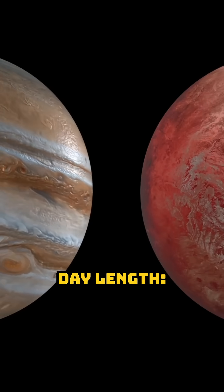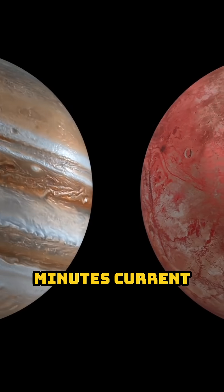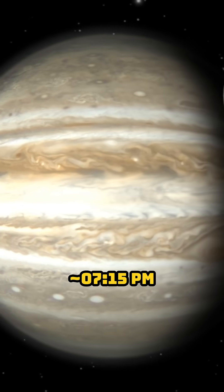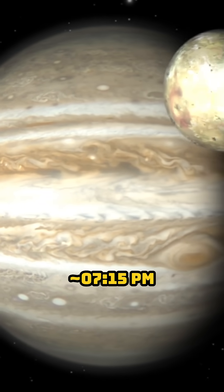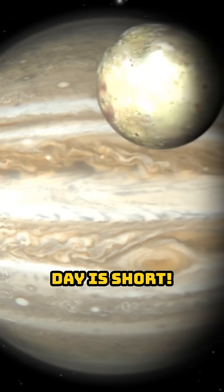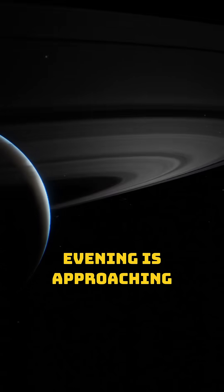Number 5: Jupiter. Day length 9 hours 56 minutes, current time 7:15 PM. A Jupiter day is short. If it's noon on Earth, evening is approaching on Jupiter.